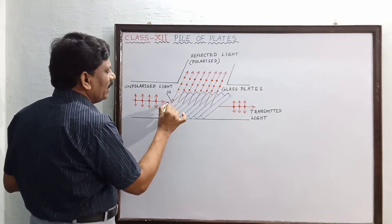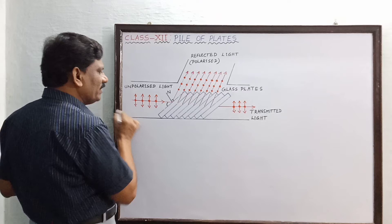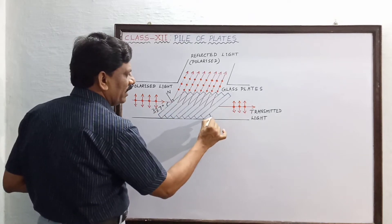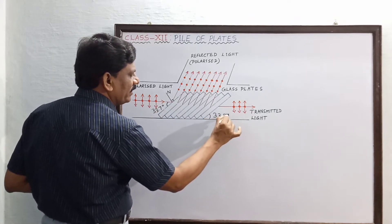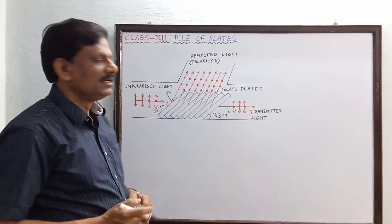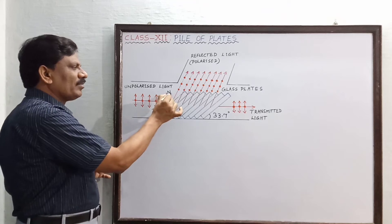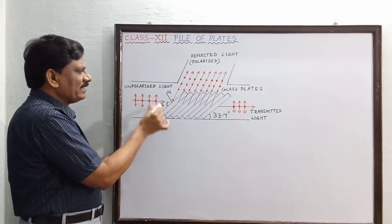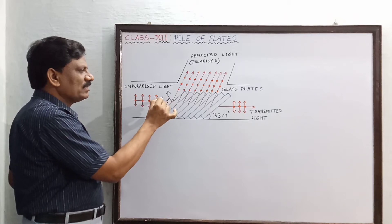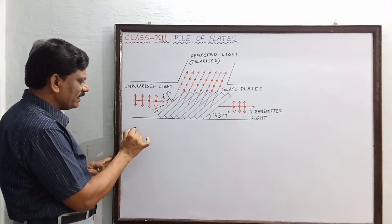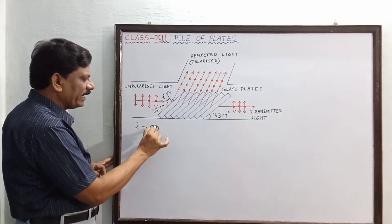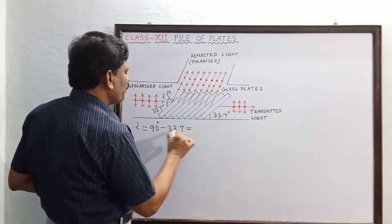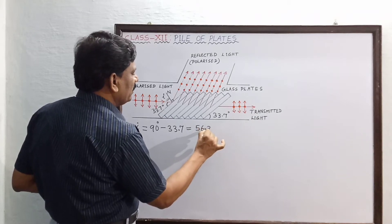The angle at which the glass plates are piled with the axis of the tube is 33.7 degrees. At this point of incidence, you draw a normal N. The angle of incidence of the incident unpolarized beam of light is equal to 90 minus 33.7, which gives us 56.3 degrees.